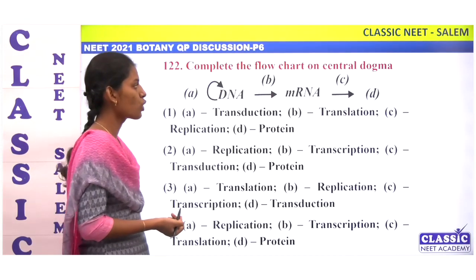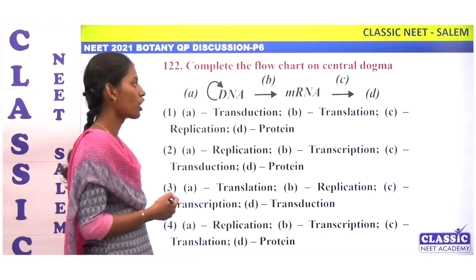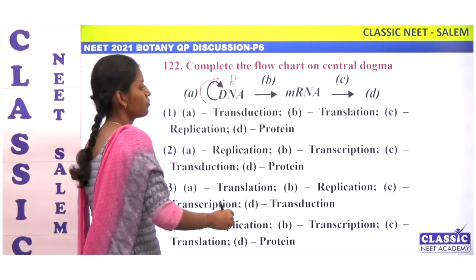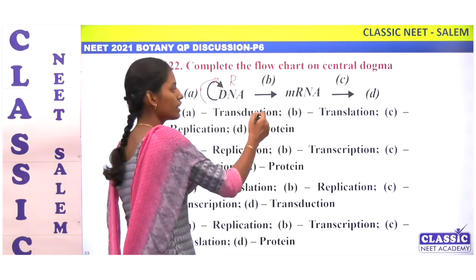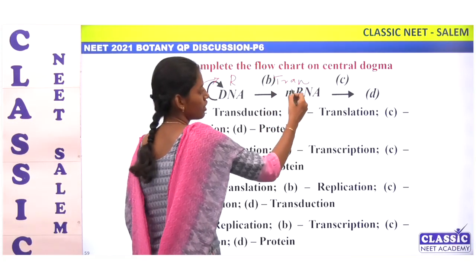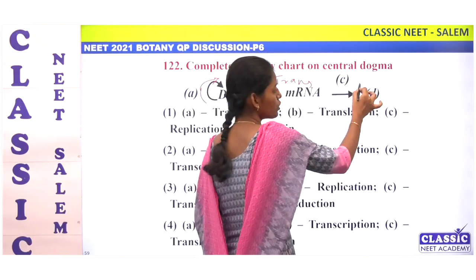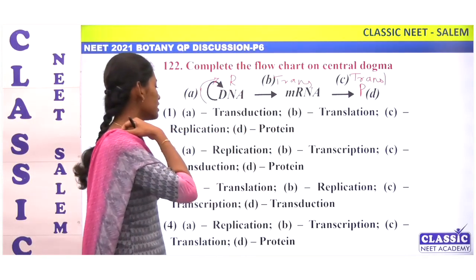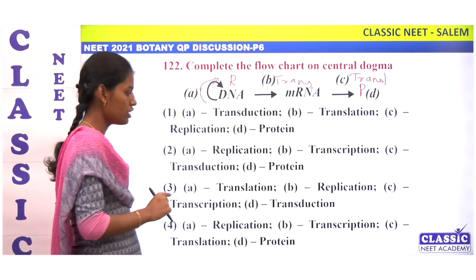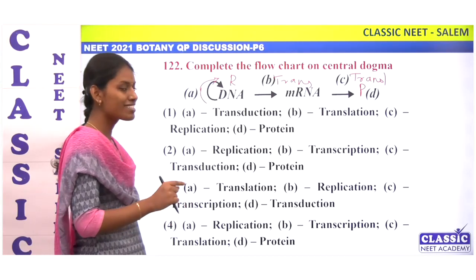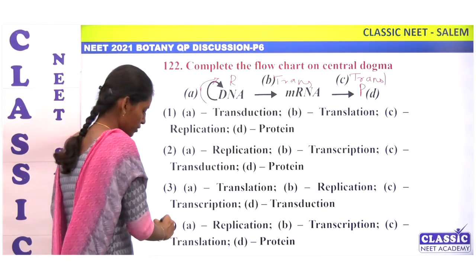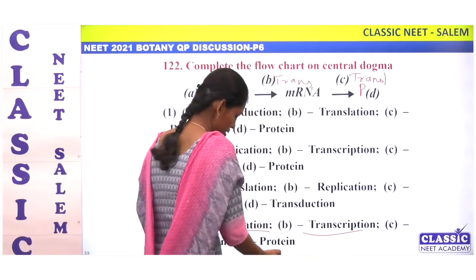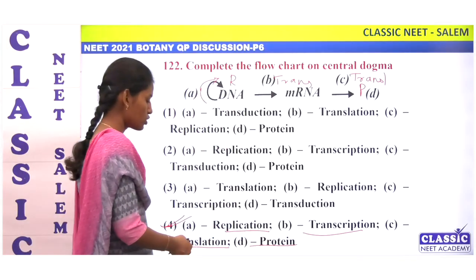Complete the following chart for the central dogma. DNA undergoes replication; DNA to mRNA is transcription; mRNA produces protein through translation. So A is replication, B is transcription, C is translation, and D is protein. Option 4.